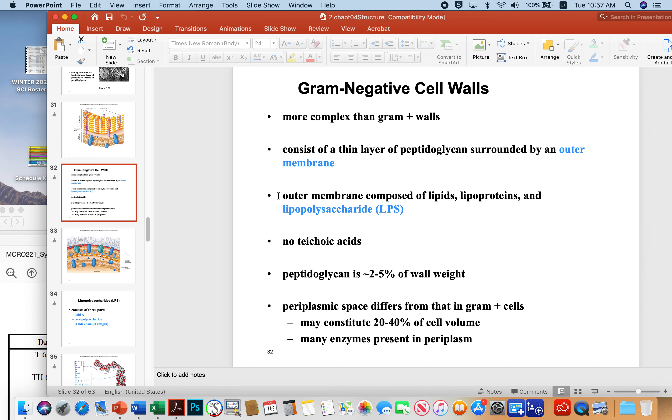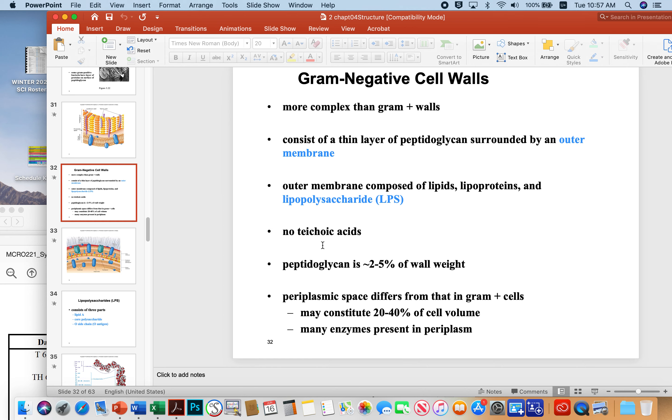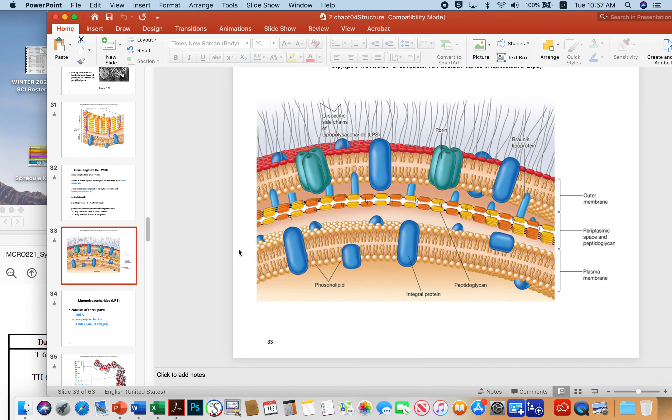As far as the gram-negatives, it's clearly more complex. There's an extra layer and there's just a few extra things that are happening. There's an outer membrane, particularly, that's composed of lipids, lipoproteins, and lipopolysaccharide. But there's no teichoic acids. Peptidoglycan is only a small part of the wall weight. Whereas in gram-positives, it's a huge part of the wall weight. Periplasmic space differs from that in gram-positive cells. And so again, you can kind of see from this cartoon the differences.